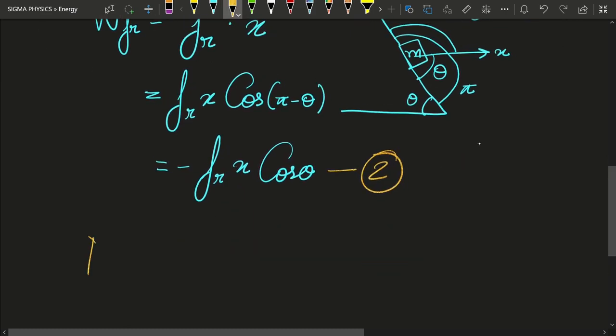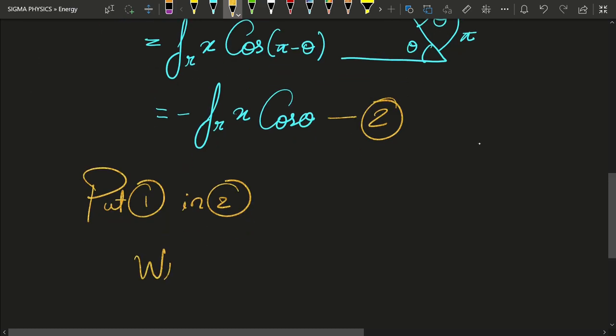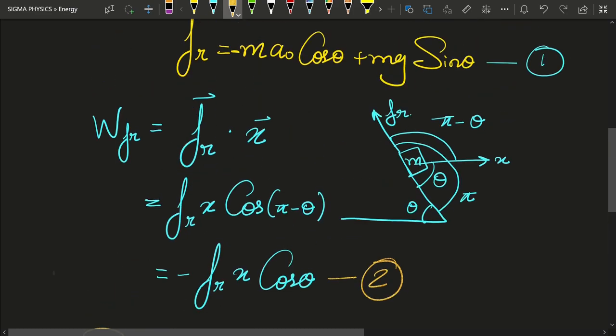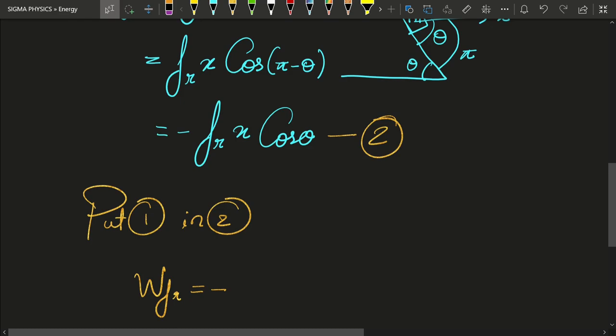then what I am going to do is put 1 in 2, so that I will be left with the work done by friction would be equal to minus fr, which was m g sin theta minus m a0 cos theta,